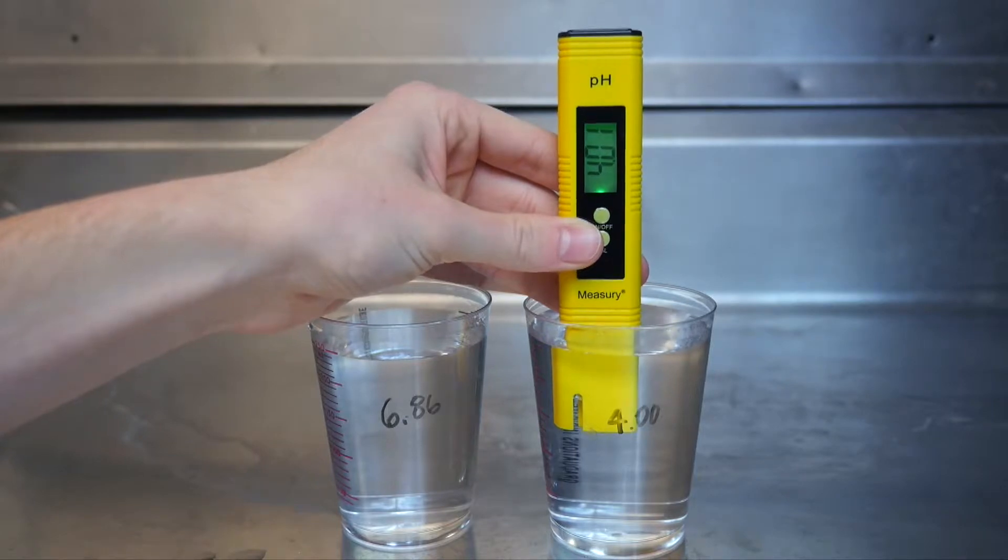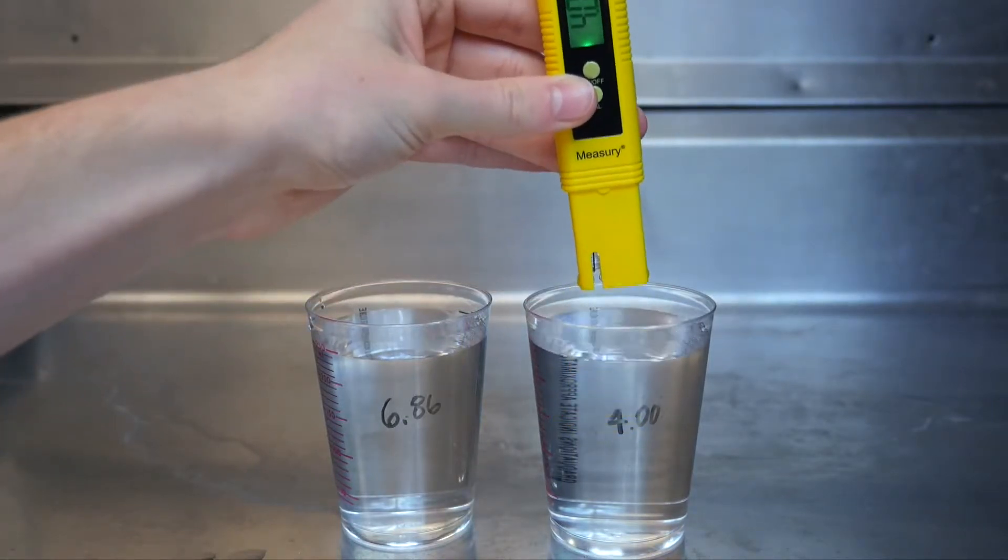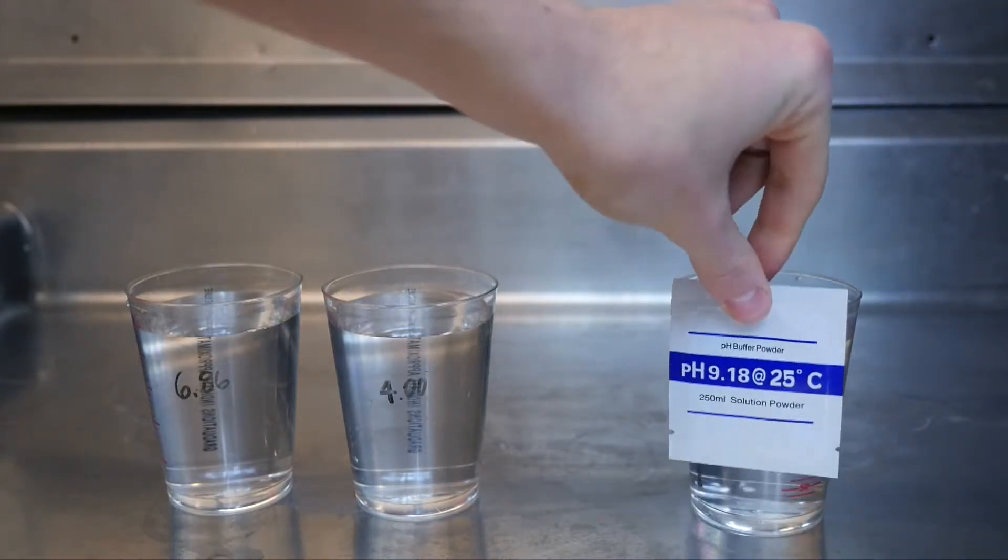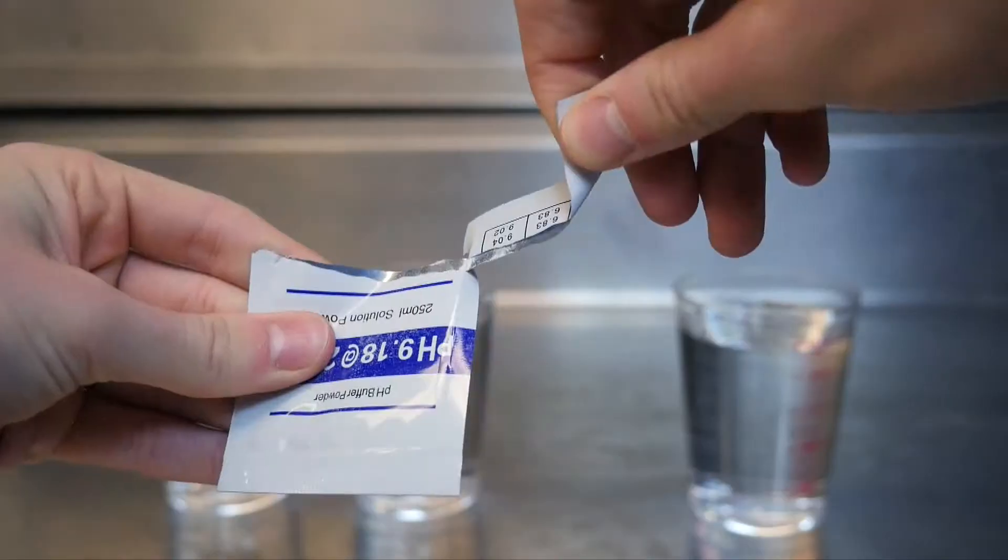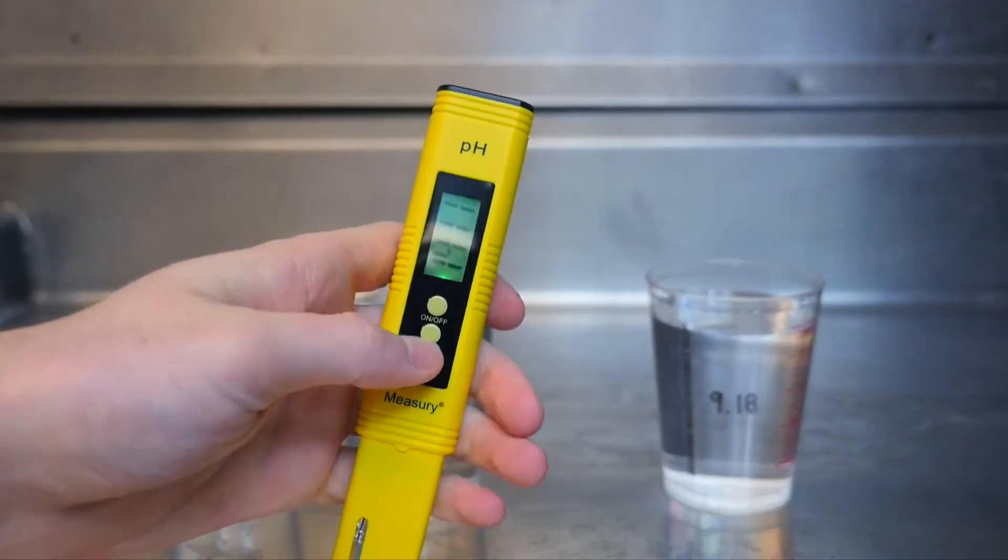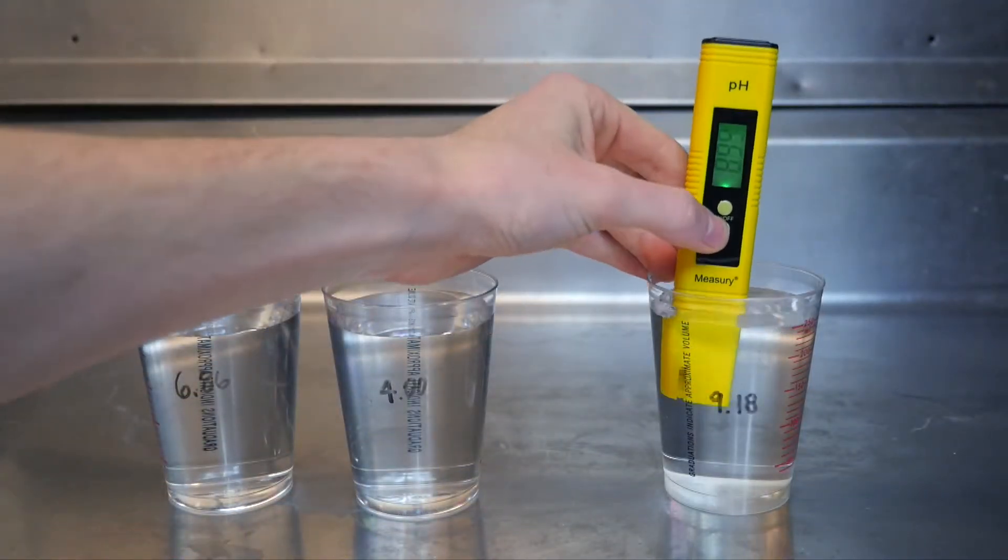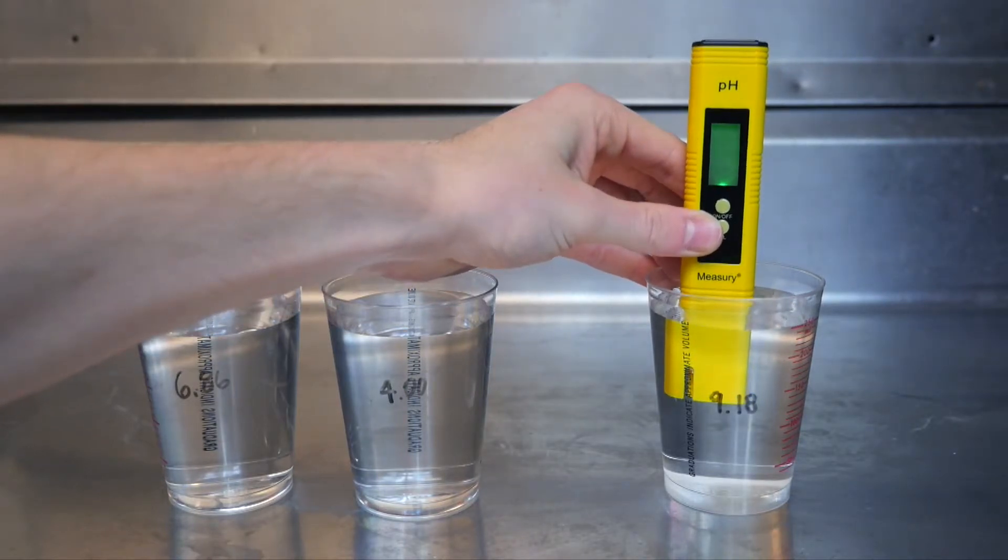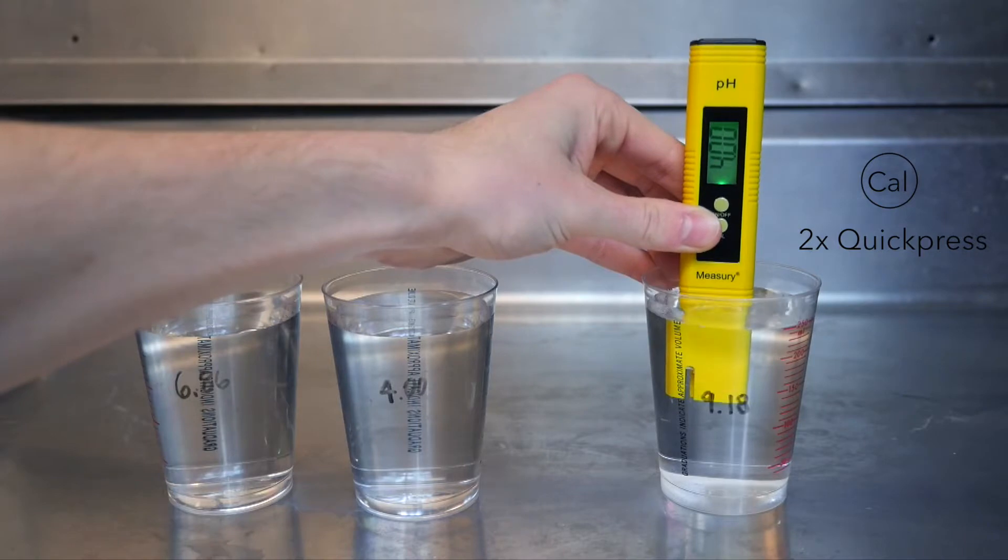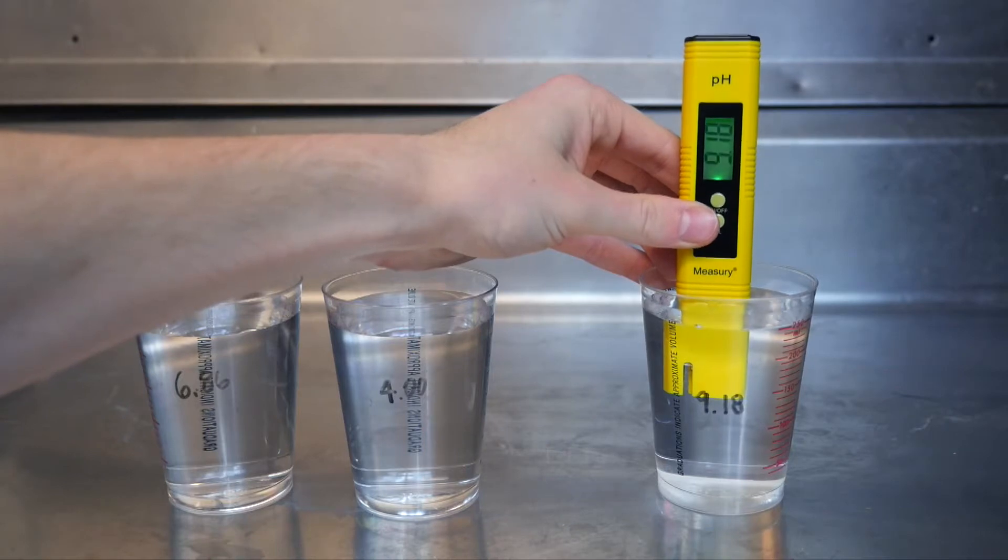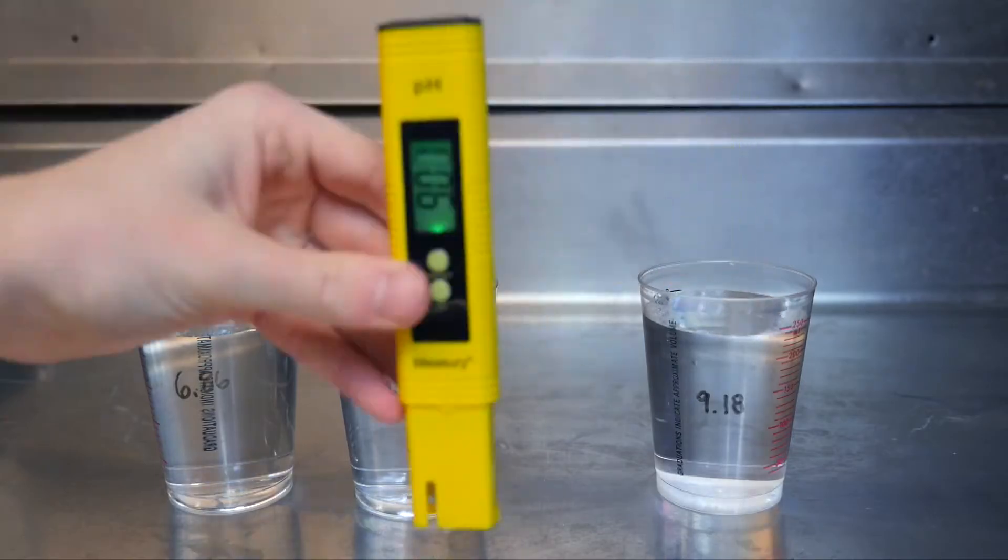Now, you may be done calibrating the unit here, but if you're going to be using this meter to test solutions that should read above 7, then you must do one extra step using the 9.18 calibration solution. Insert the meter's electrode into the 9.18 pH solution. Press and hold down the cal button for five seconds. After you release the button, you will see a number flashing. Quick press the cal button two more times and then 9.18 will be the number flashing. Wait for it to stop flashing and now your pH meter is fully calibrated to test solutions that have pH readings above 7.